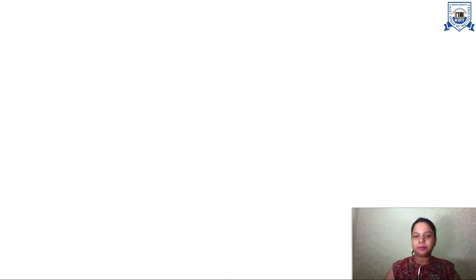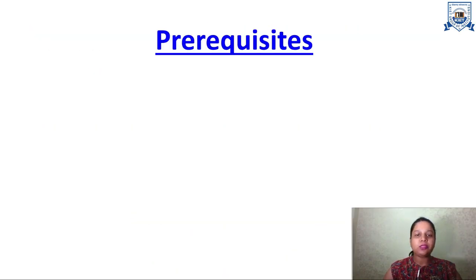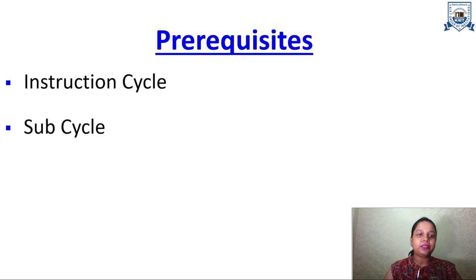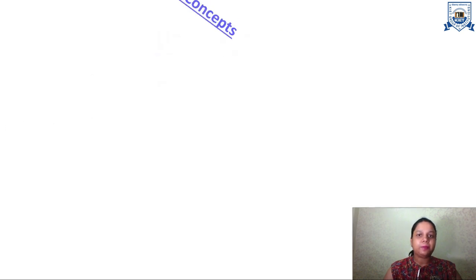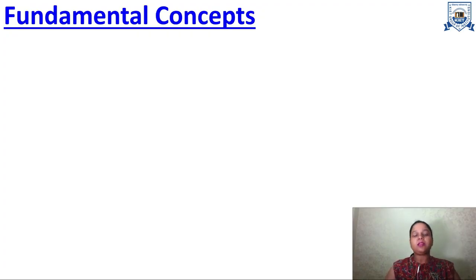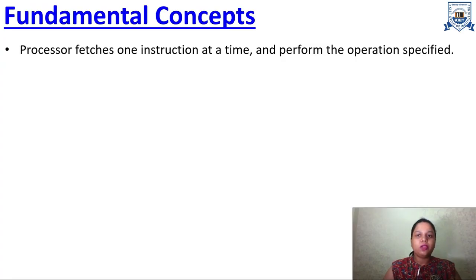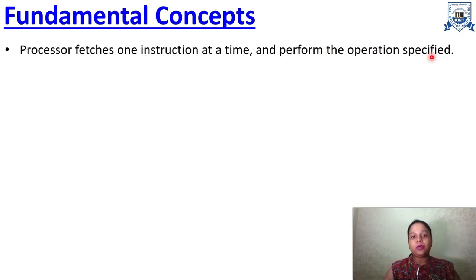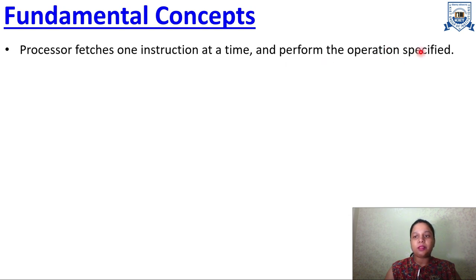Let's get started. Here are some prerequisites — you must have gone through the video on instruction cycle and sub-cycle. Now let's see the fundamental concept we are going to use for this video. We are going to study about the processor and how instructions are fetched, decoded, and executed. The processor fetches one instruction at a time and performs the operation specified.